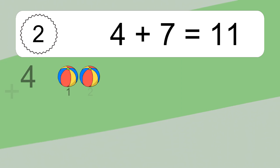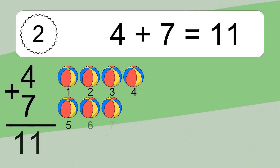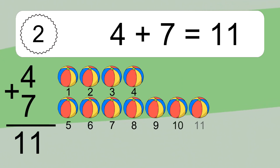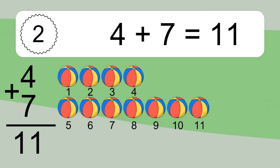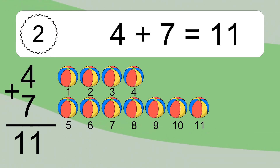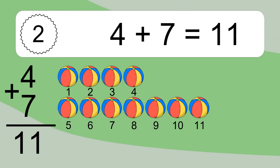4 plus 7 equals 11. Let's count it. 1, 2, 3, 4, 5, 6, 7, 8, 9, 10, 11.